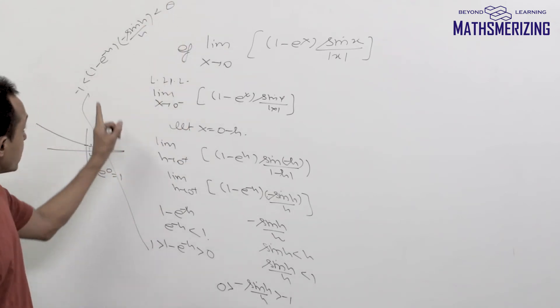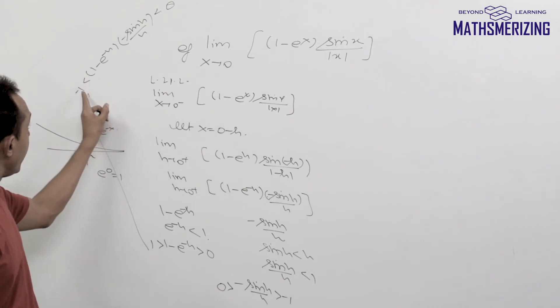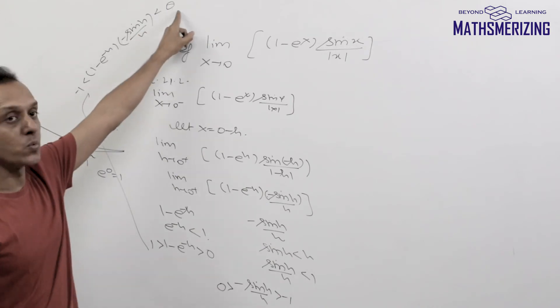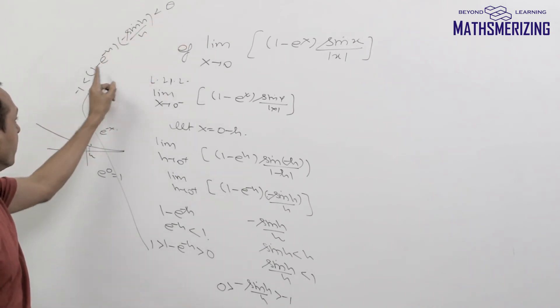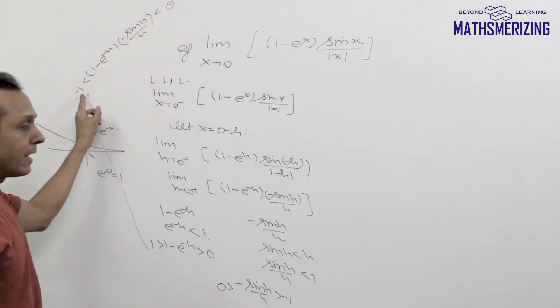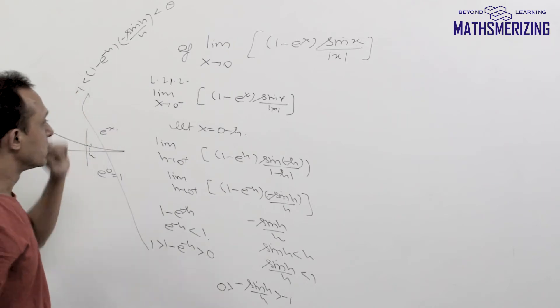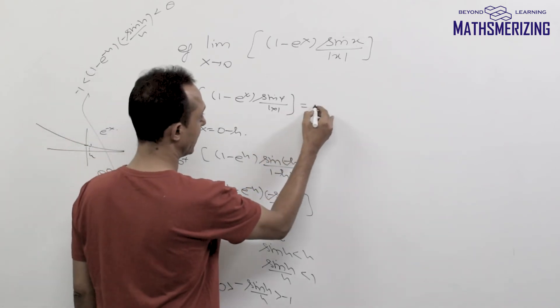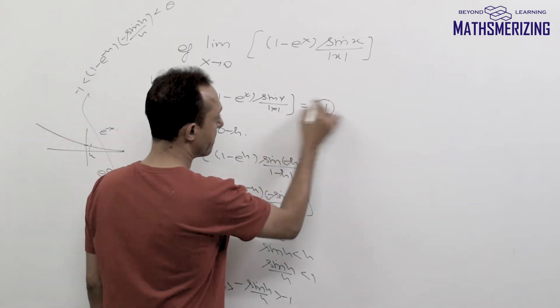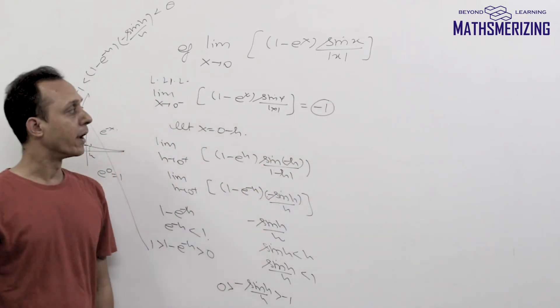When an expression lies between n and n plus 1, its greatest integer function is simply n. So in this case, the value of the left-hand limit is simply minus 1.